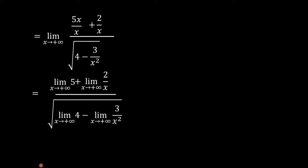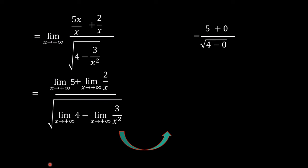The limit of 5 as x approaches positive infinity is 5, and the limit of 2 over x as x approaches positive infinity is 0. The limit of 4 as x approaches positive infinity is 4, and the limit of 3 over x squared as x approaches positive infinity is 0. So this is equal to the square root of 4 minus 0, giving us 5 over the square root of 4. The square root of 4 is equal to 2, so this is now equal to 5 over 2.